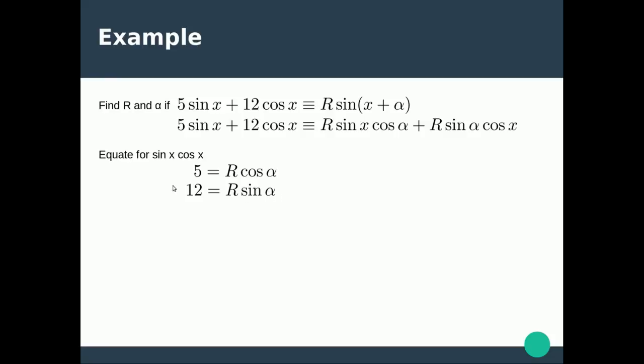Now we always divide the sin function by the cos function because sin divided by cos gives us tan, the R's cancel and 12 divided by 5 is 2.4. So alpha is just going to be tan to the minus 1 of 2.4. We'll use that value later.